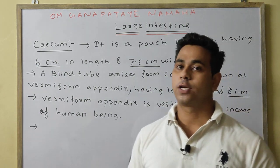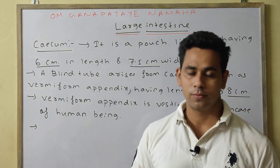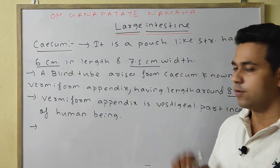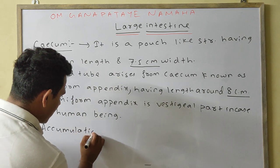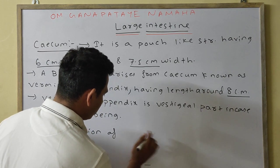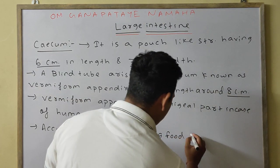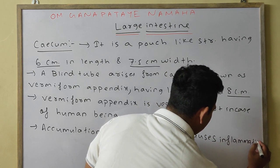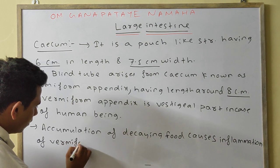However, if food gets accumulated in the vermiform appendix it becomes infected. The accumulation of decaying food causes inflammation of the vermiform appendix.